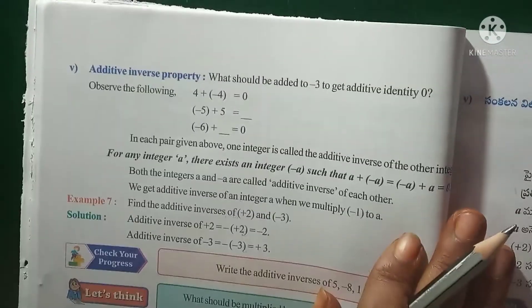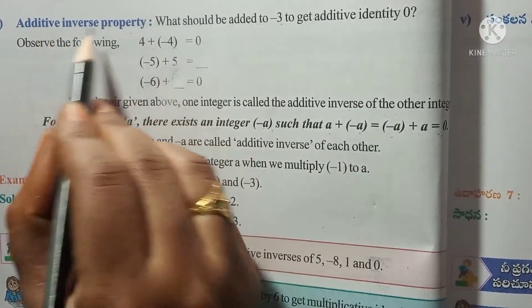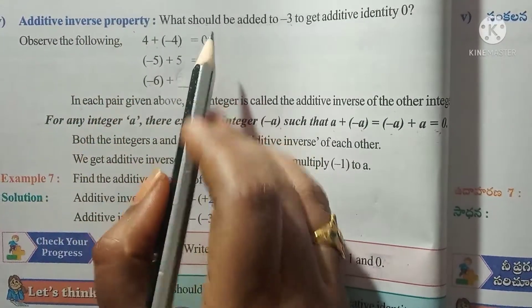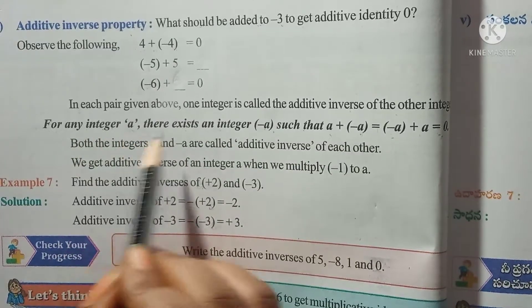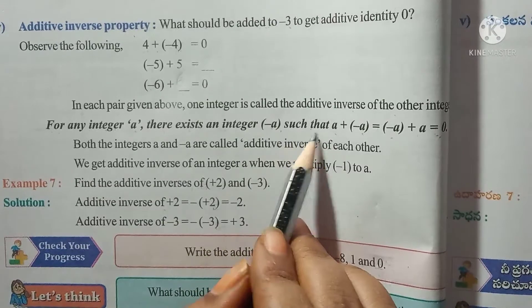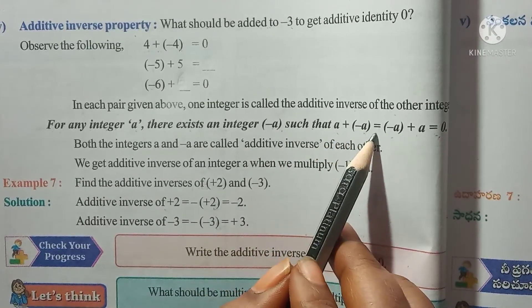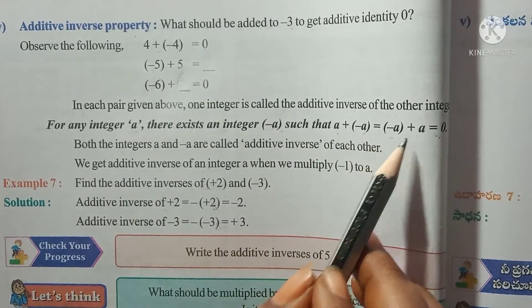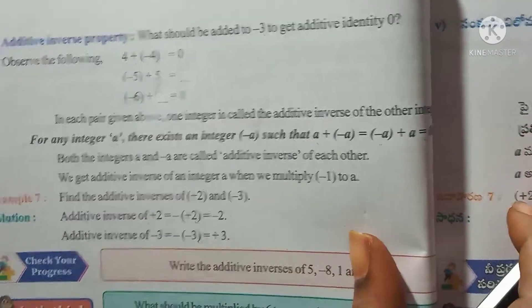Now let's see the additive inverse property. For any integer a, there exists an integer minus a such that a plus (-a) is equal to (-a) plus a, which is equal to 0.